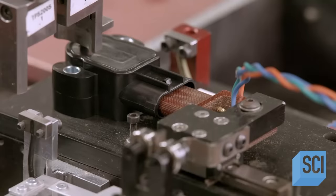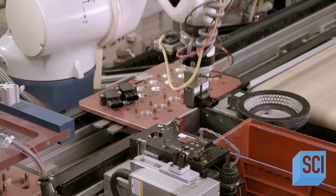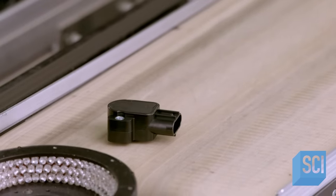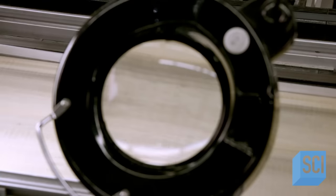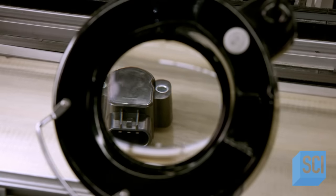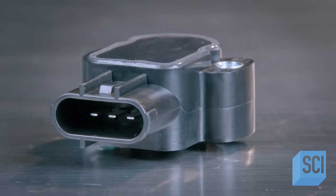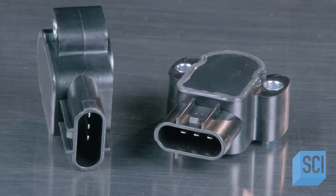A robot holds the sensor in front of a laser, which etches the date of manufacture. Back on a conveyor, the throttle position sensor travels under a magnifying glass so that the laser etching job can be scrutinized. This throttle position sensor is now ready for detection duty.